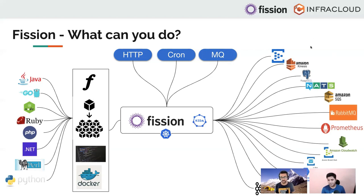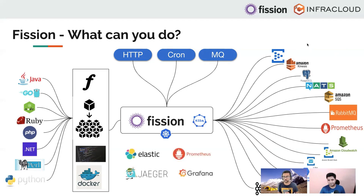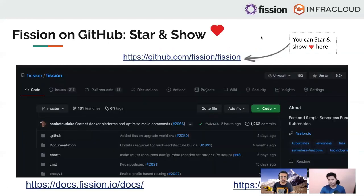When you have a platform like this which is executing a whole bunch of functions and microservices being invoked on the fly, you want detailed observability. Fission integrates with almost all the major observability tools like Elastic, Prometheus, Jaeger, and Grafana to give you visibility into what is happening in your cluster when you execute these functions and microservices. We are on GitHub at Fission/Fission - please star us and follow us. If you have any issues, check out the documentation, join us in Slack, and ask questions.